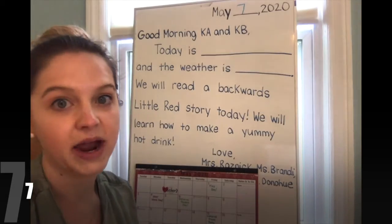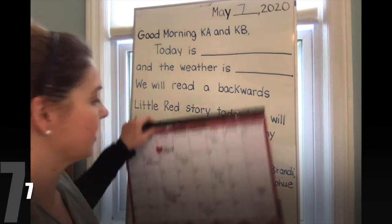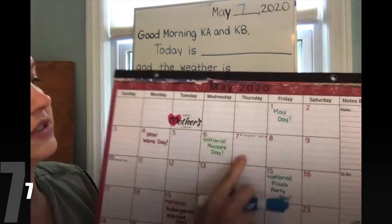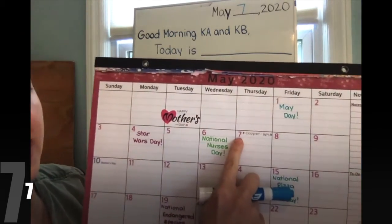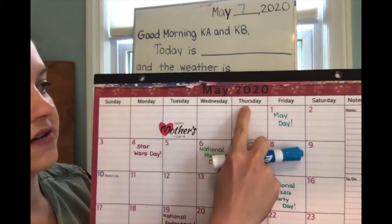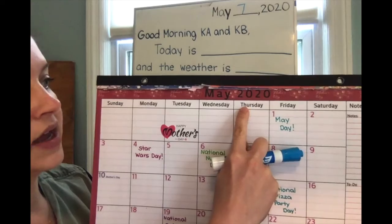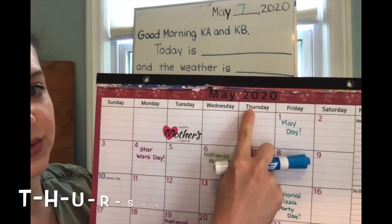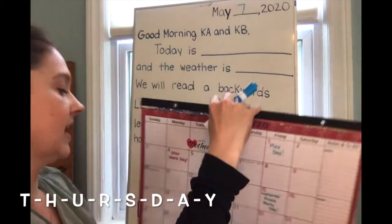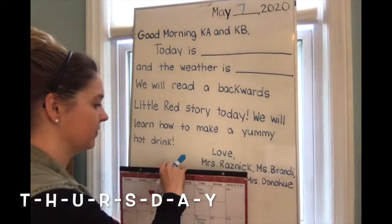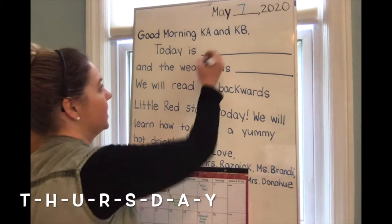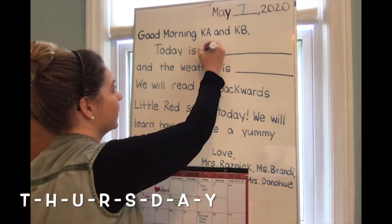Now let's go back and find the day of the week. If I find that number seven on my calendar, we're going to slide our finger up, and today is the day that starts with the digraph. Go ahead and say it out loud for me. You can help me spell it while I write it.